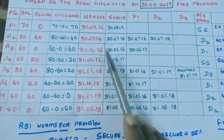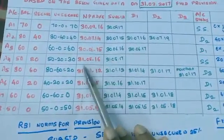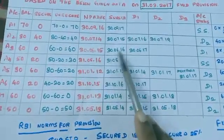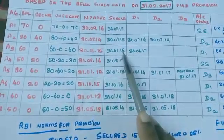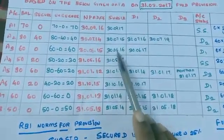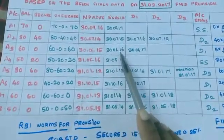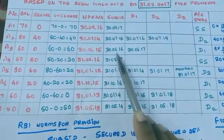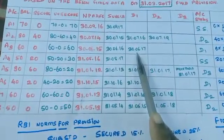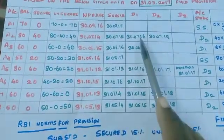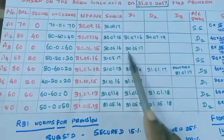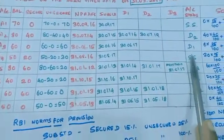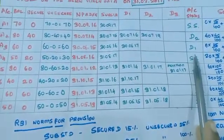The NPA date for A3 is 3-6-15. Up to 3-6-16 it comes under substandard account, and up to 3-6-17 it falls under D1. So this account is classified as D1 as on 31-3-17.